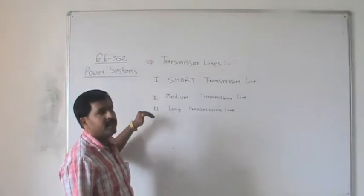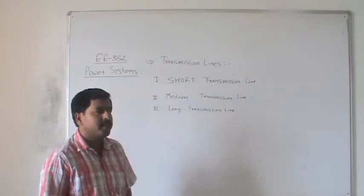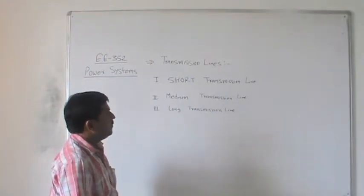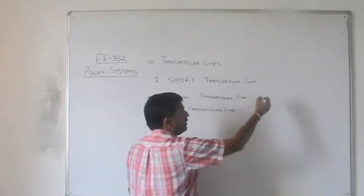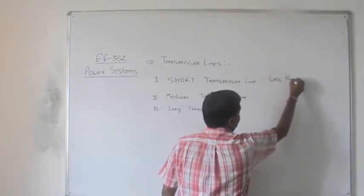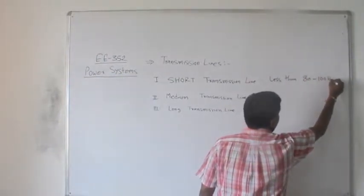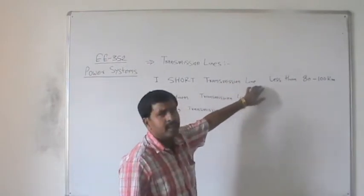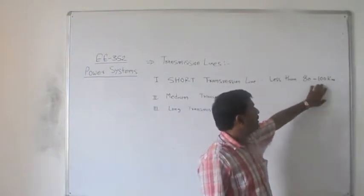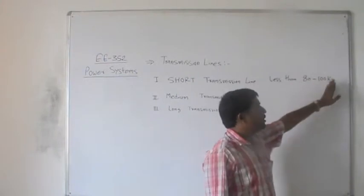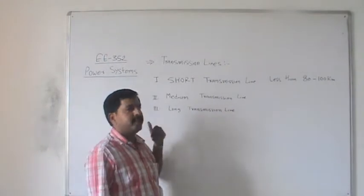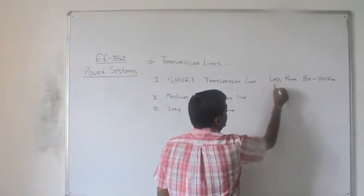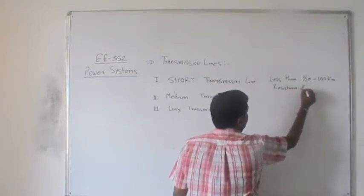How do we classify transmission lines into these categories? It depends mainly on the distance or power carried from one point to another. If the distance is less than 80 to 100 km, the line is known as a short transmission line. For short transmission lines, we consider only resistance and inductance as parameters.